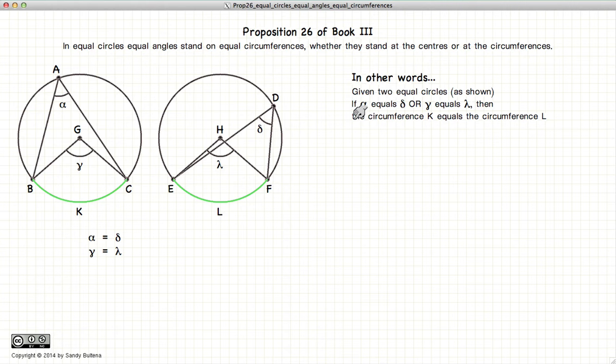So, in this case, if Alpha is equal to Lambda, if one is true, the other is true, vice versa.